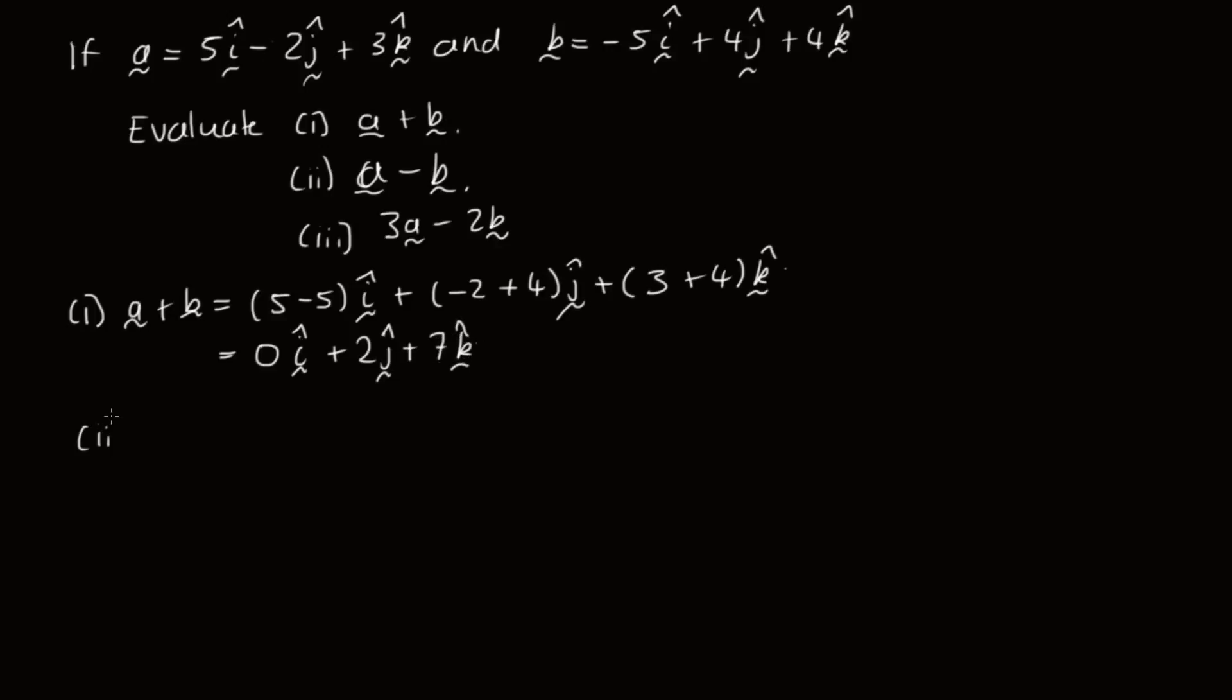Now in part 2, we've got a minus b. So in this case, we've got 5, and then we've got minus minus 5i, plus minus 2 minus 4j, plus 3 minus 4k. So this is equal to 10i minus 6j minus k.